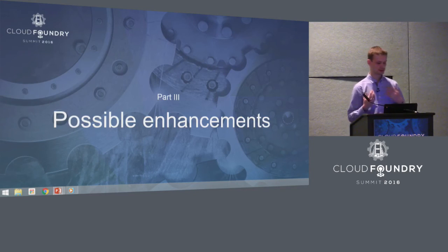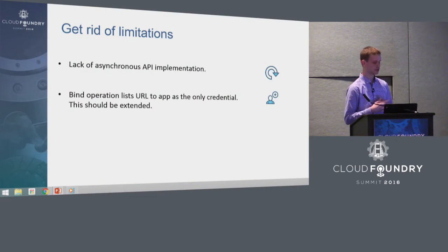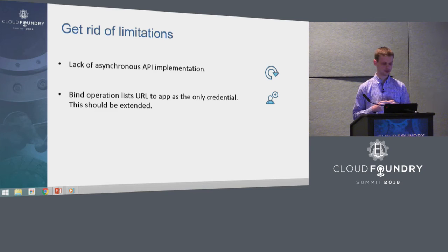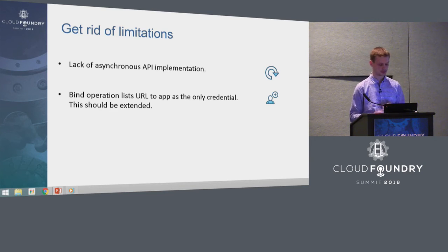Let me talk about possible enhancements. First, we have some limitations in Application Broker. To talk about the lack of asynchronous API implementation — when coping with some large applications to be handled, we may end up with some timeouts. To work around it, we can increase timeouts on the HA proxy instances, but the final solution would be to implement asynchronous API.